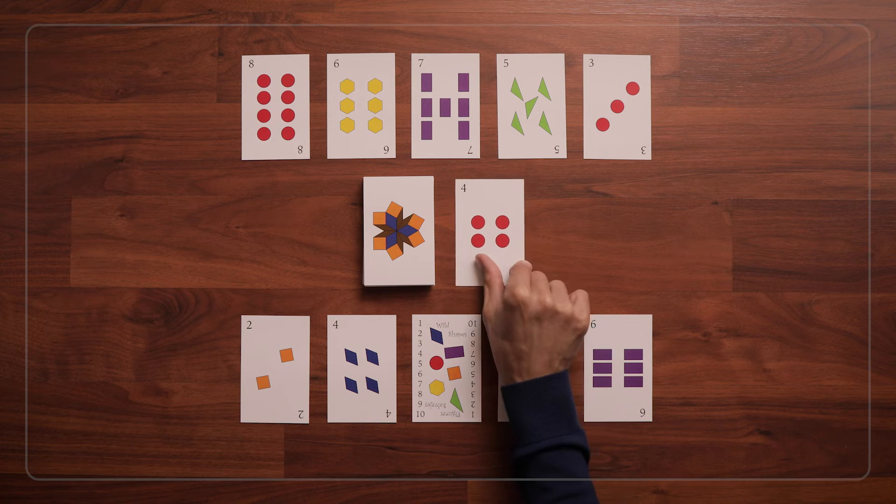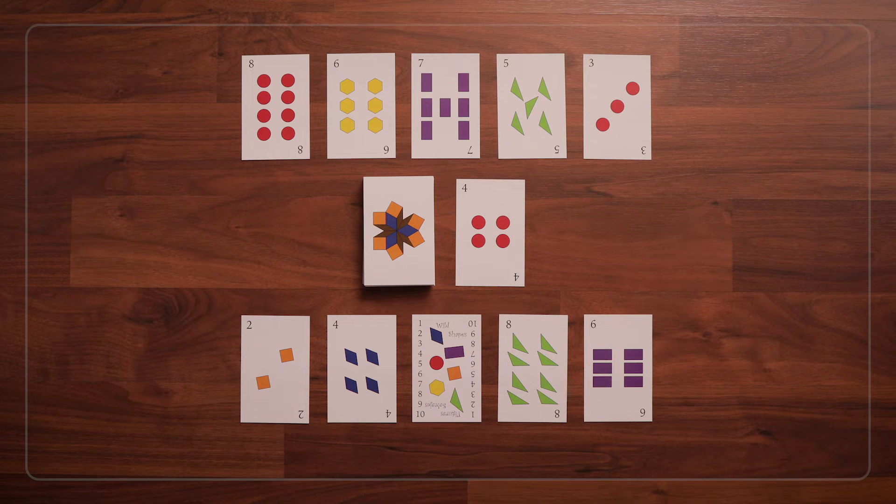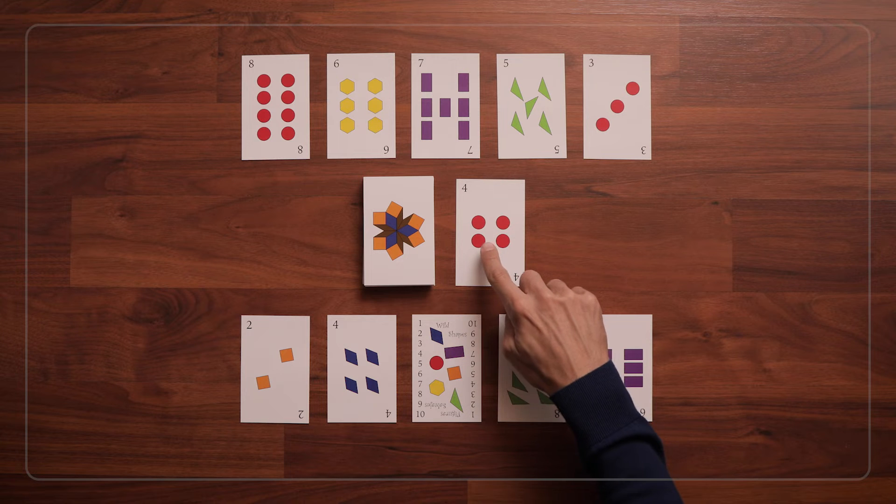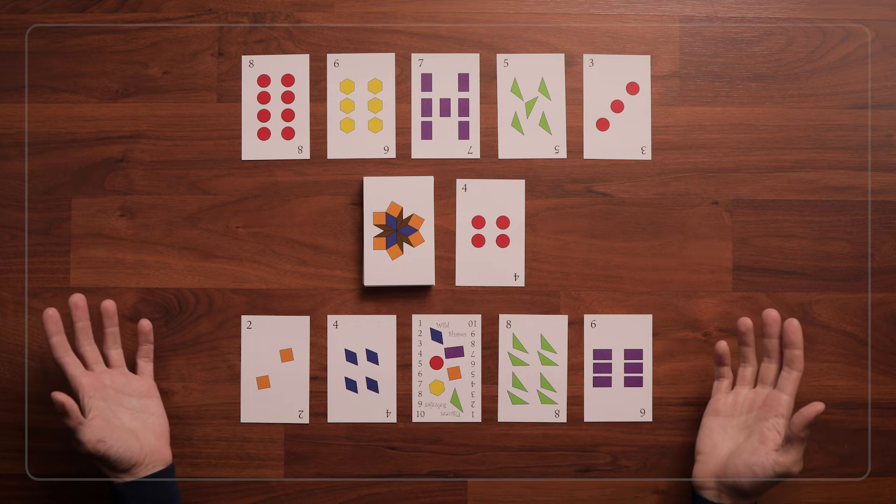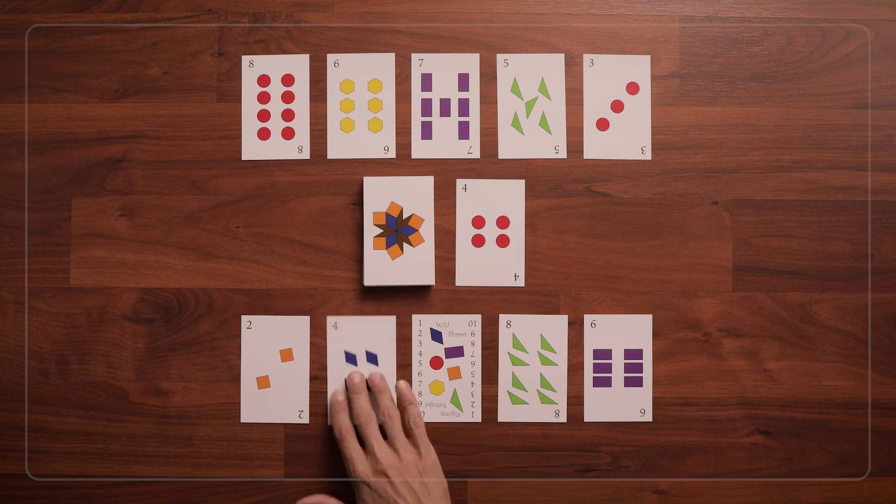The first card is 4 circles. So if I'm going first, I'll either need to put down a 4 card or a circle card. I don't have any circle cards, but I do have this 4 rhombus card, so I'll play that.